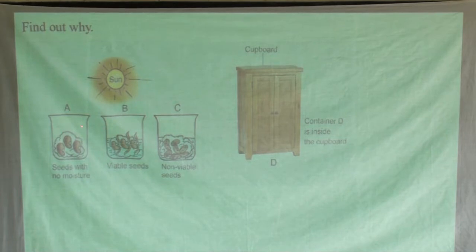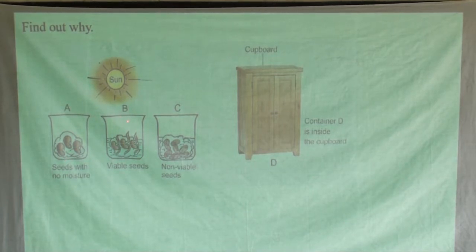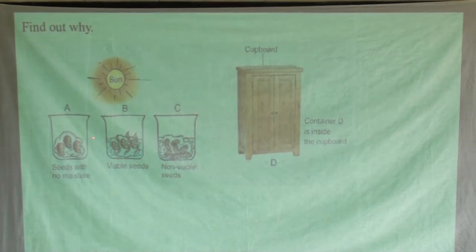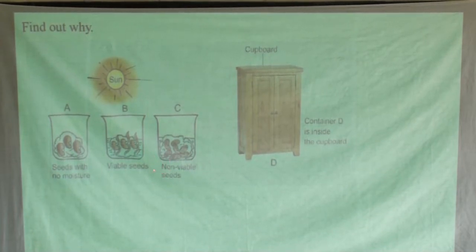Looking at these containers, we have A, B, C, and D. We make sure that containers A, B, C, and D have sunlight providing light throughout. Of course, light can't enter the cupboard, but light is provided for the others outside in the presence of sunlight to have light and warmth.